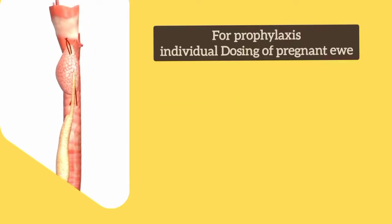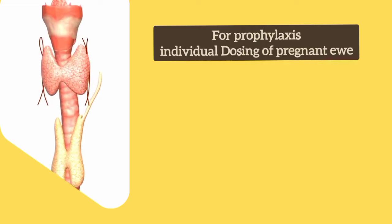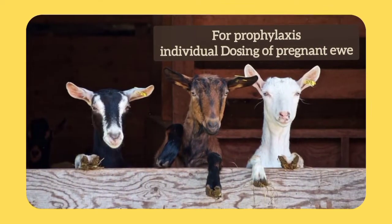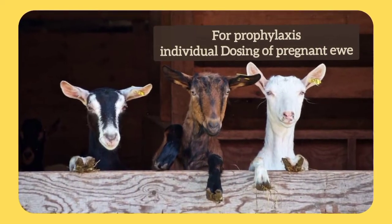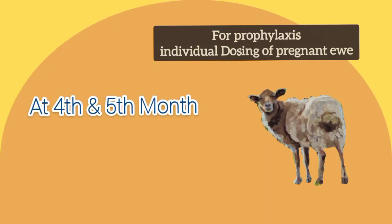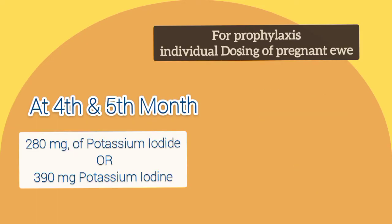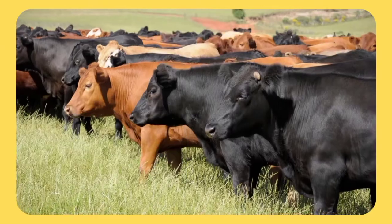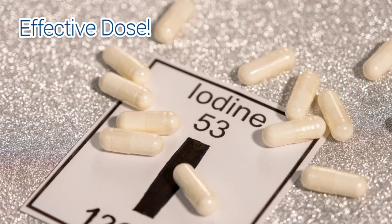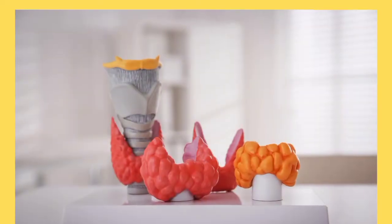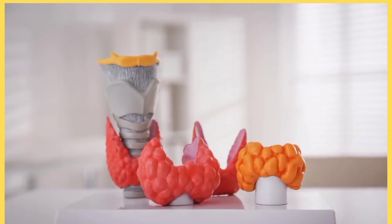For prophylaxis, individual dosing of pregnant ewes on two occasions during the fourth and fifth months of pregnancy with 280 milligrams of potassium iodide or 390 milligrams of potassium iodate is effective to prevent goiter in lambs. Also, restriction of calcium in the diet, and weekly painting inside the thigh with tincture iodine — 4 milliliters in cattle and 2 milliliters in sheep.